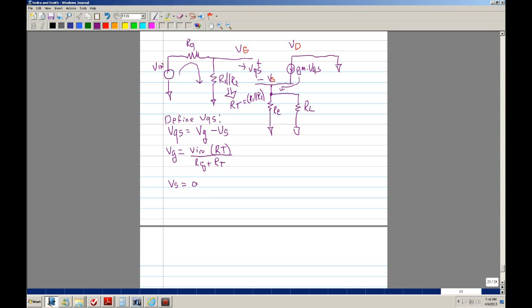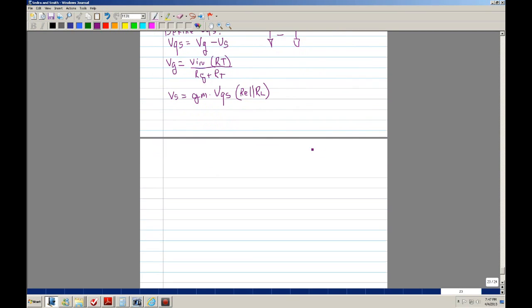So that would be Gm VGS, and since it's flowing in this direction, this is a plus, that's a negative. So it's Gm VGS times, and I'll go ahead and say that it's RE in parallel with RL. So we have that.